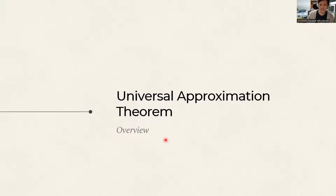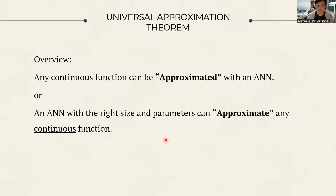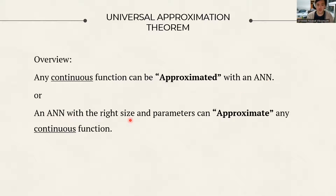Now let's go into the Universal Approximation Theorem. In plain language: any continuous function can be approximated with an artificial neural network. Or equivalently, an artificial neural network with the right size and the right parameters can approximate any continuous function.